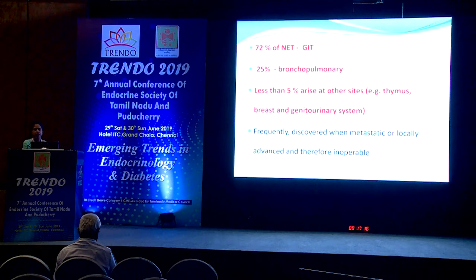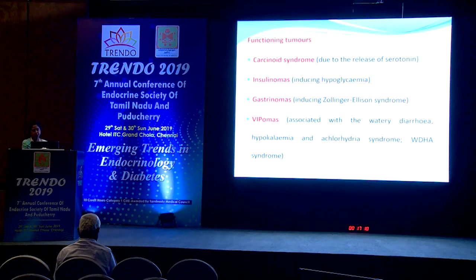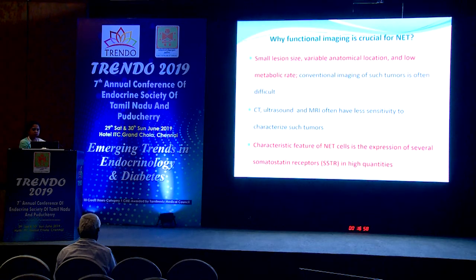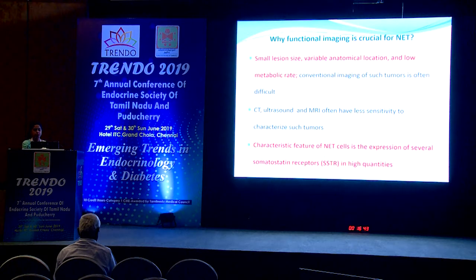NETs are often diagnosed when locally advanced or inoperable. They include functioning tumors known by the syndromes they produce: carcinoid syndromes, insulinomas, gastrinomas, and VIPomas. Functional imaging is crucial because NETs present in very small sizes, have variable anatomical locations, very low metabolic rates, and characteristically express somatostatin receptors in high quantities — all of which make them ideal for functional imaging.